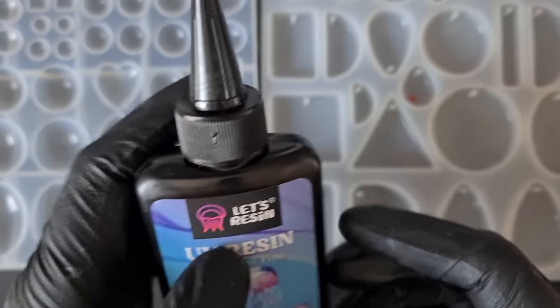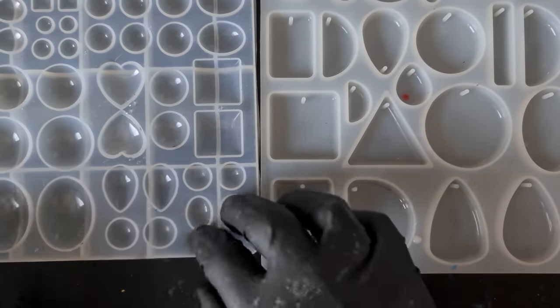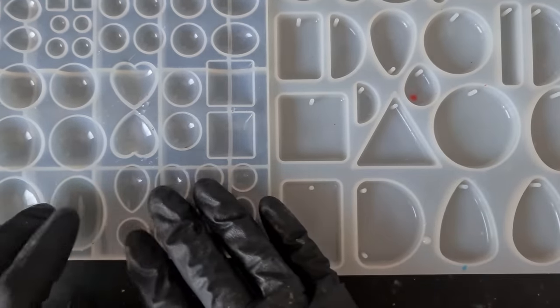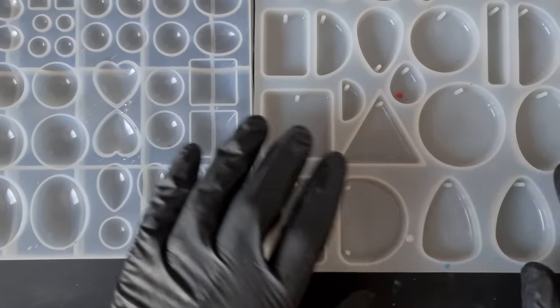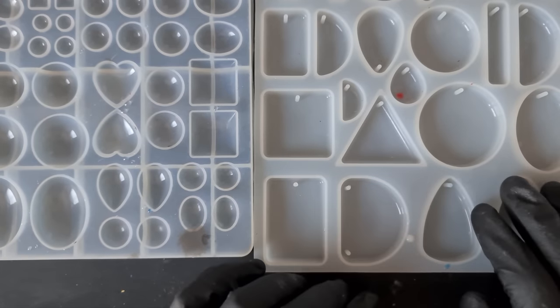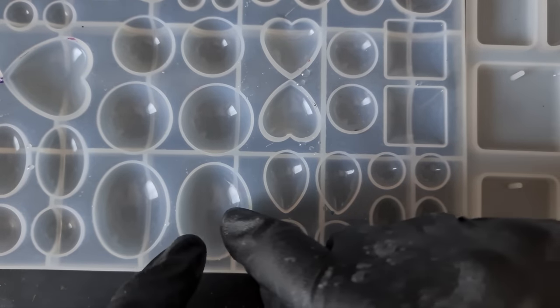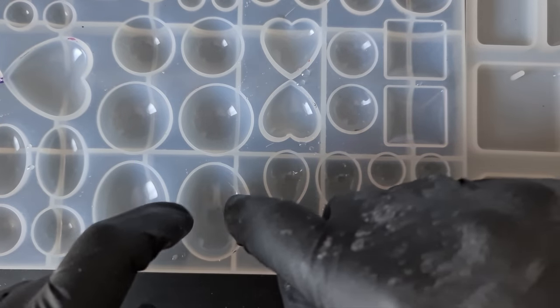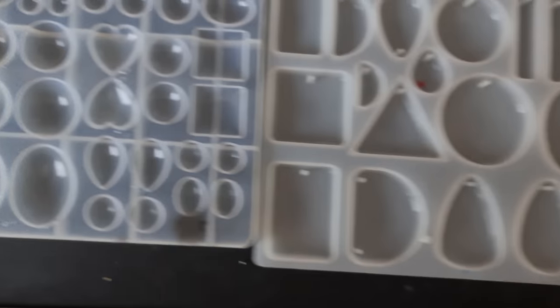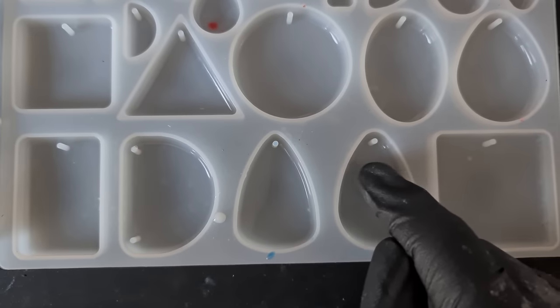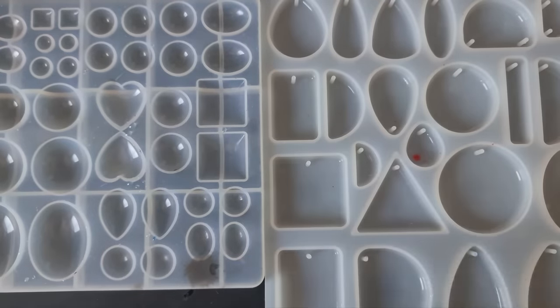What we're going to be using is the Let's Resin UV for this. Now the reason why I'm using UV is because I'm going to do it in this mold, and I'll show you why I need to use UV. But I'm pretty sure you could do this with two-part resin in a flat mold, because with a mold like this your resin is gonna just self-level and seep down into the middle and puddle, whereas with a flat mold that's not really going to occur.